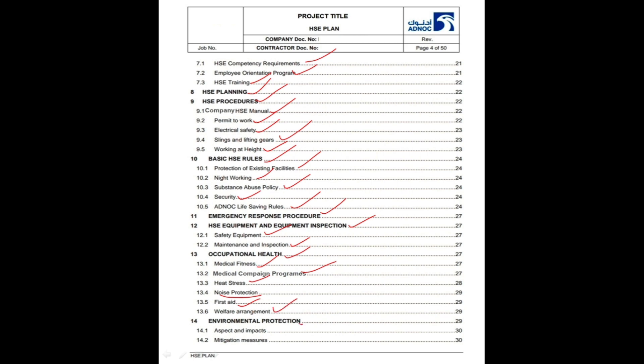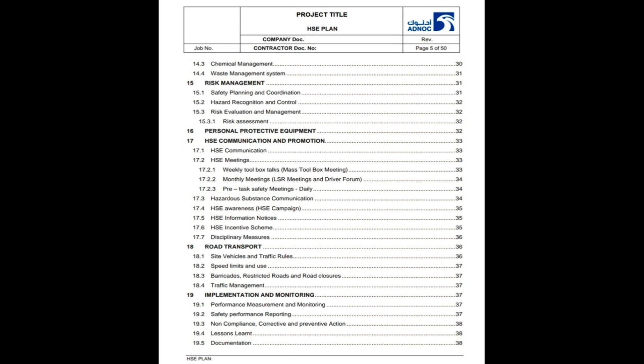Environmental Protection. In this section, some topics will be covered like aspects and impacts, mitigation measures, chemical management, waste management, and waste management system procedures.